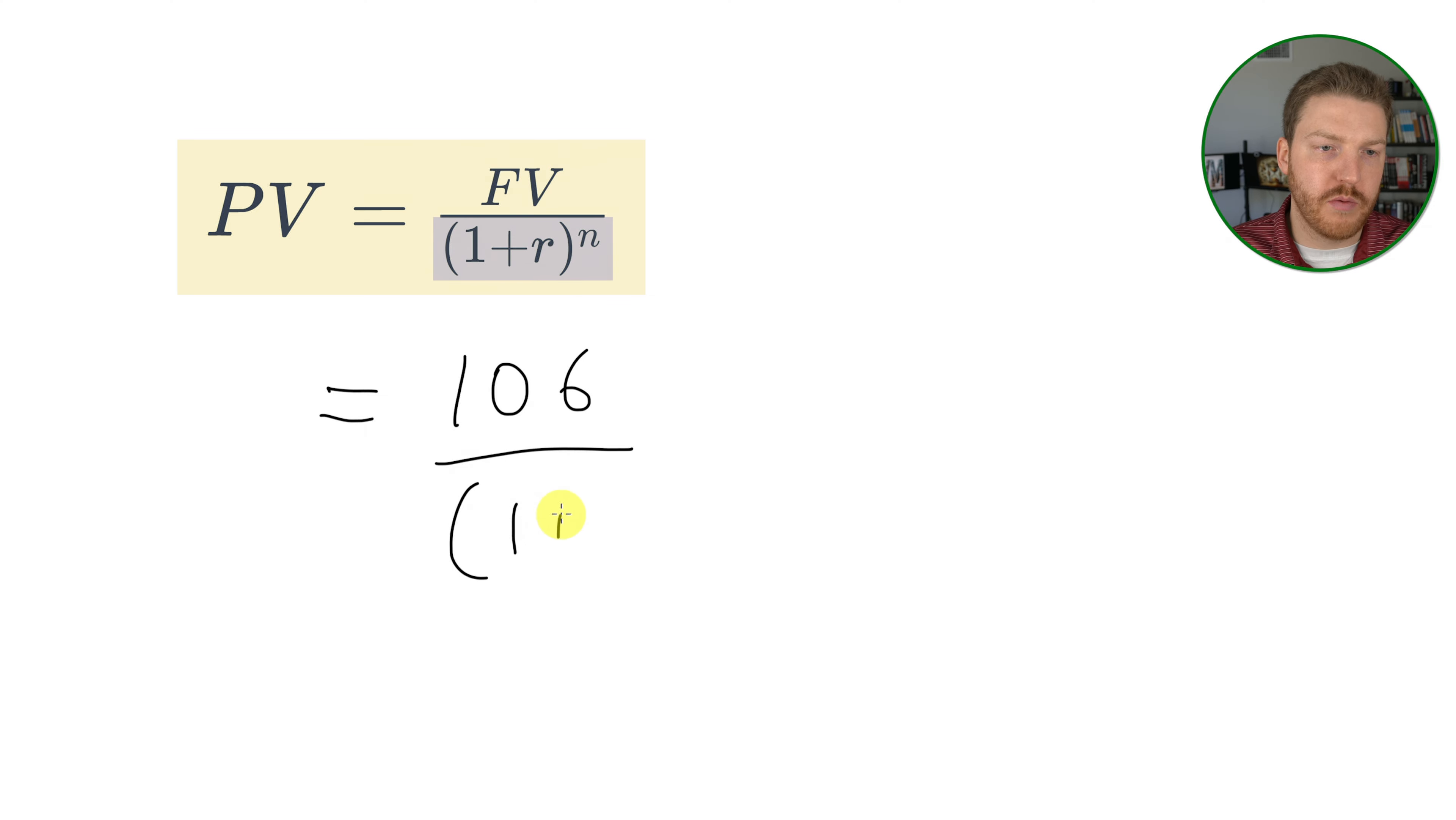divided by 1 plus the interest rate of 6% to the exponent of the number of years, which was just one, and that brings us back to our present value of $100 today.